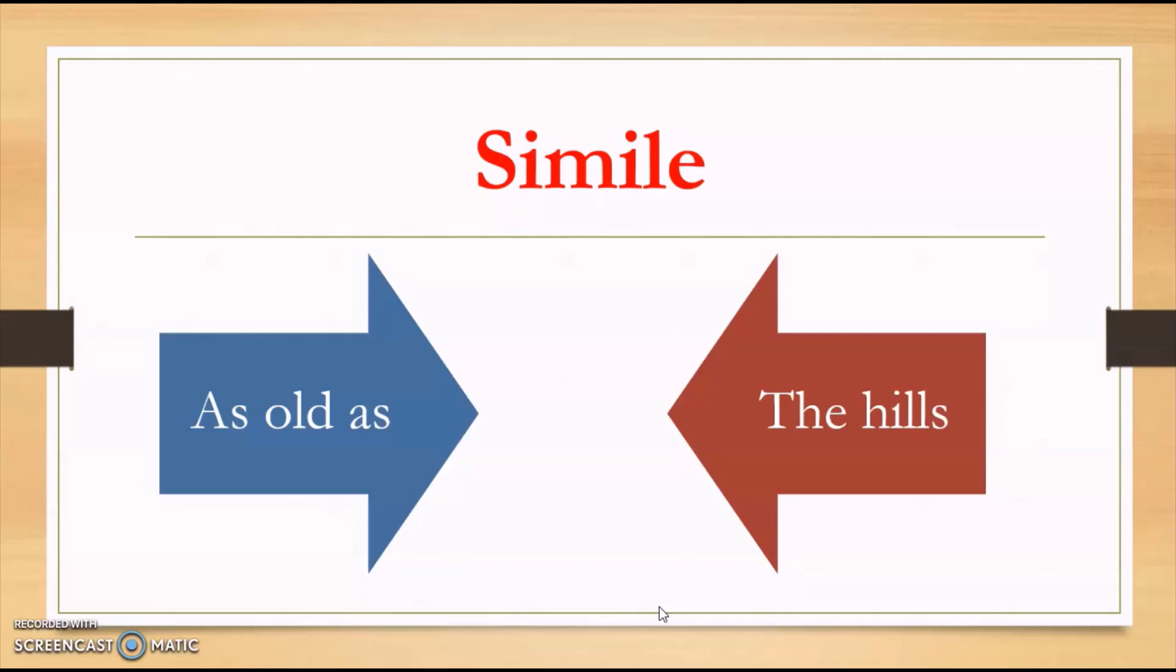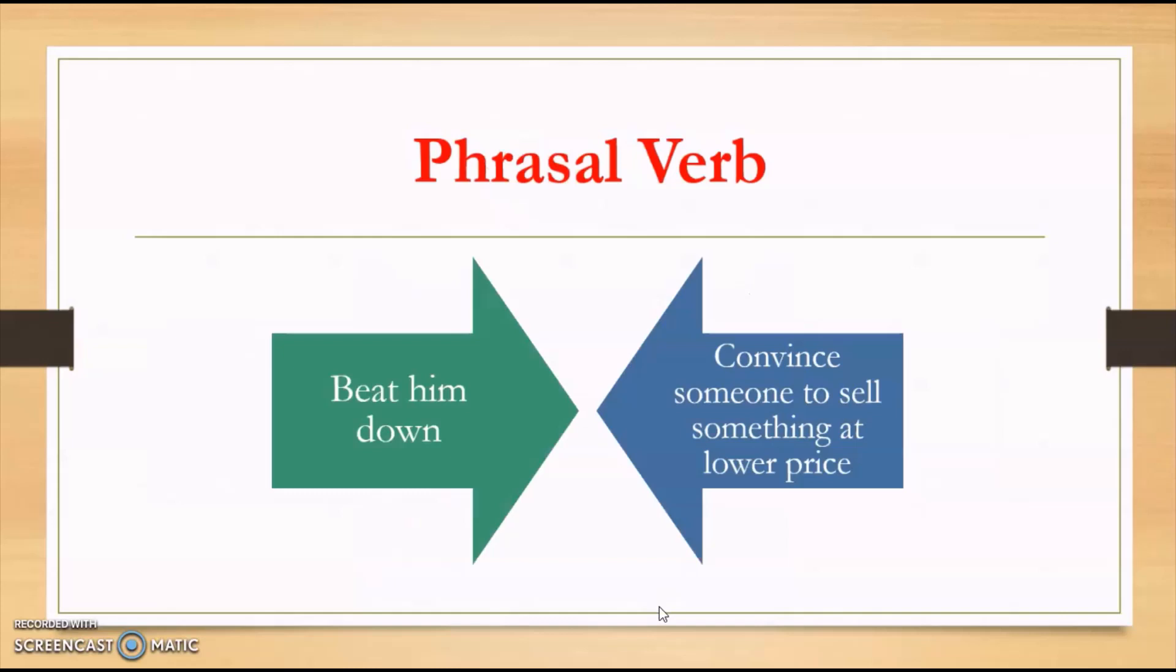The next question is for five points, that is phrasal verb again. The phrasal verb given in 2019 paper is beat him down. Beat him down means convince someone to sell something at a lower price. The statement is given as a trader asked for a heavy price or high price, but I managed to beat him down. It means I convinced him to sell something to me at lower price.